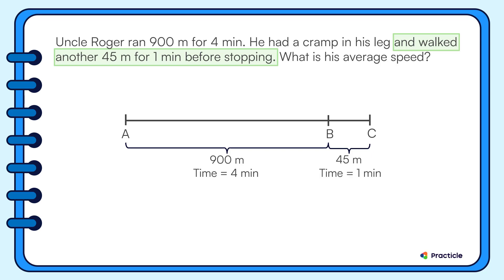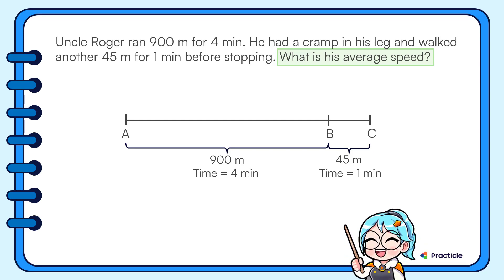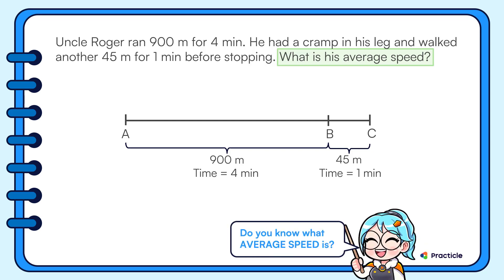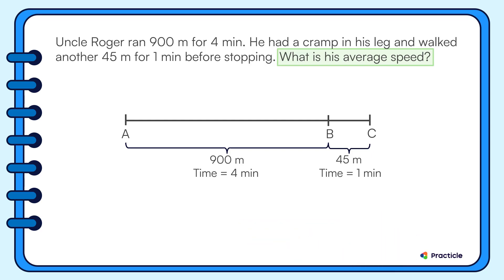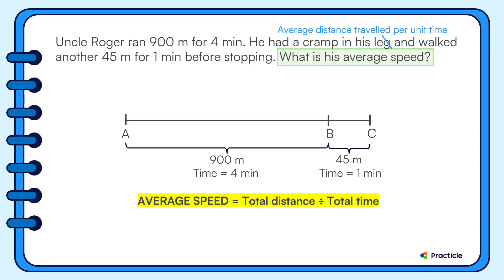Now that we're done drawing this speed diagram, let's read the question and see what we need to solve. What is his average speed? Before we can solve this, we need to know what average speed is. The easiest way to understand this is to see it as the average distance traveled per unit time. We can find the total distance that Uncle Roger ran and walked, and divide it by the total time he took.